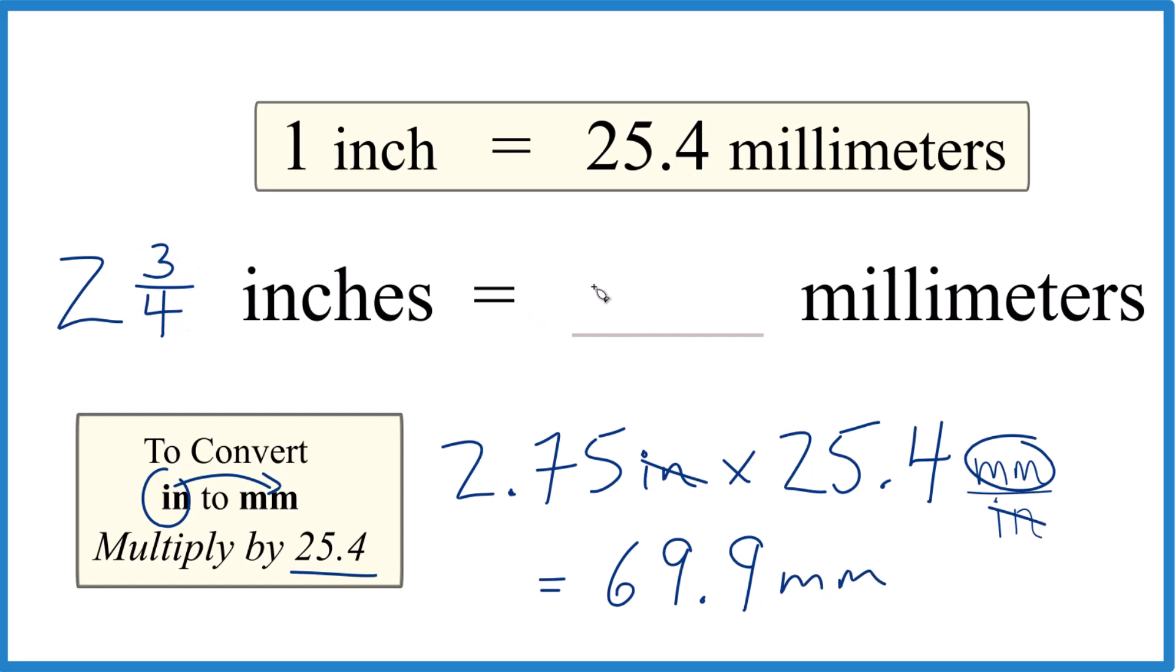So two and three-fourths inches is 69.9 millimeters. This is Dr. B. C. Thanks for watching.